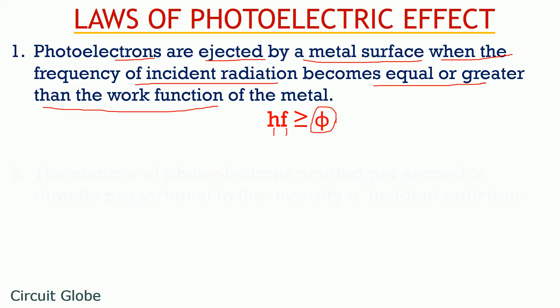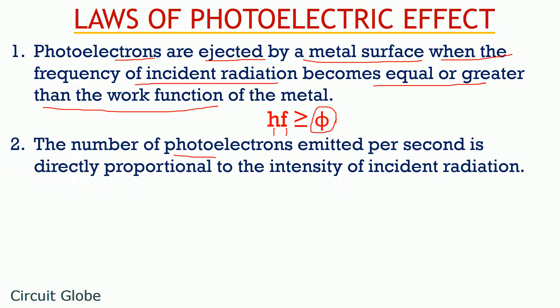The second law states that the number of photoelectrons emitted per second by the metal surface is directly proportional to the intensity of incident radiation as one incident photon on the metal can eject only one electron from its surface.